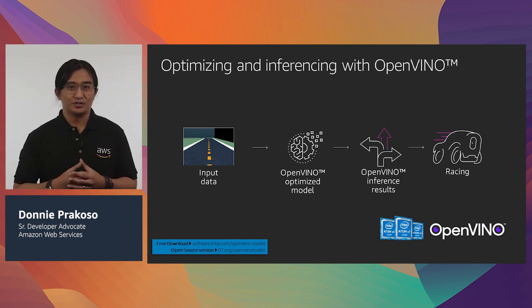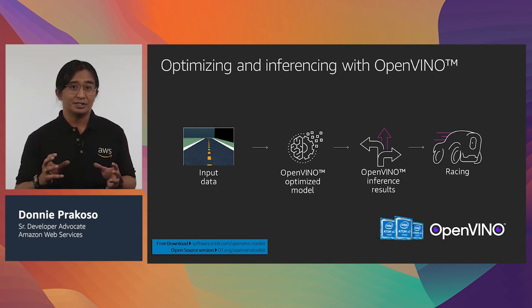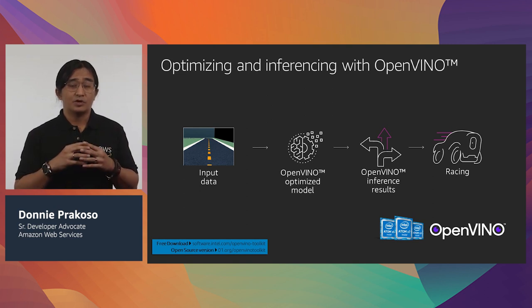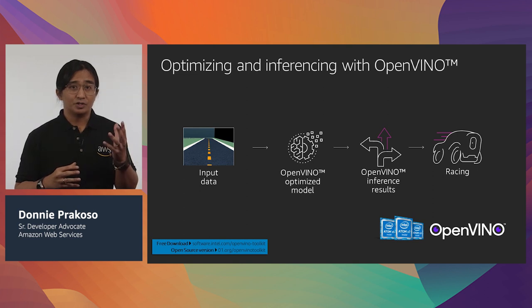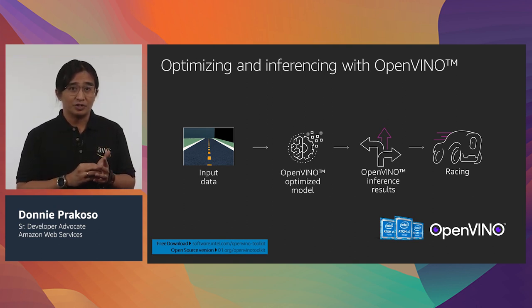OpenVINO stands for Open Visual Inference and Neural Network Optimization — a free toolkit released by Intel to help developers and data scientists speed up AI and deep learning workloads, streamline inference and deployment, and enable easy heterogeneous execution across Intel platforms including accelerators. The Intel distribution of OpenVINO Toolkit is embedded inside the DeepRacer, so you can take your trained reinforcement learning models and use the toolkit's model optimizer to convert and optimize them. The inference engine deploys on the Intel Atom processor, and OpenVINO is framework-agnostic — supporting models trained in TensorFlow, MXNet, or PyTorch.